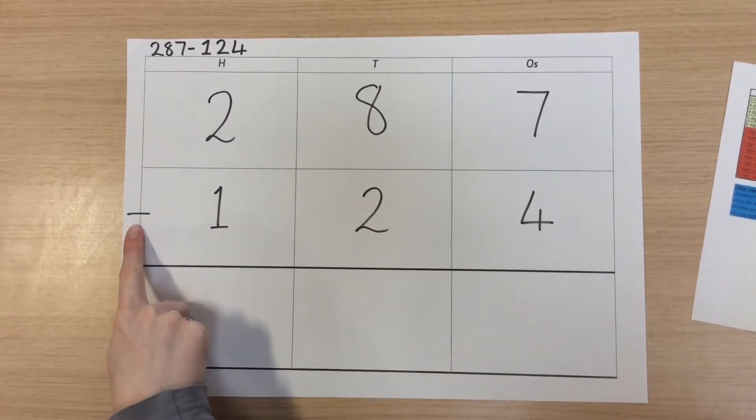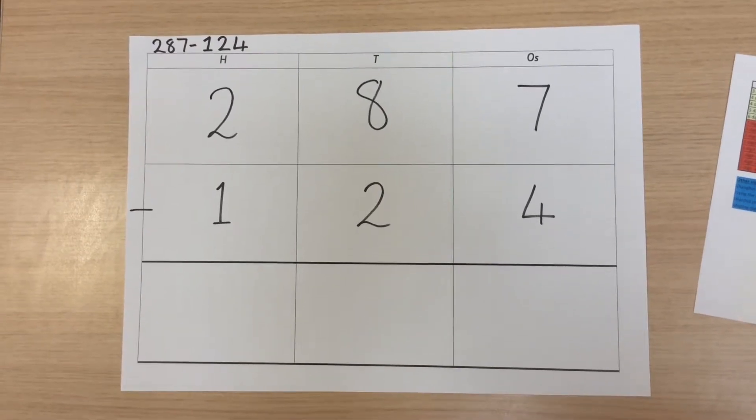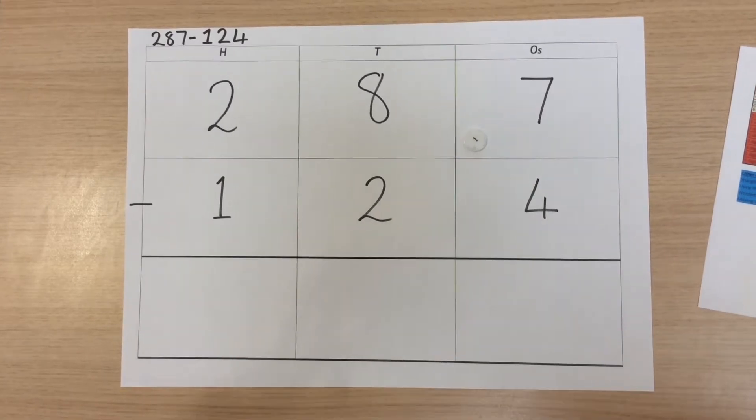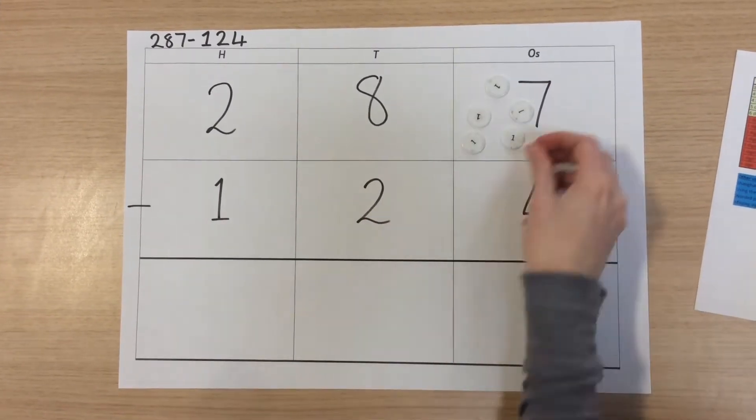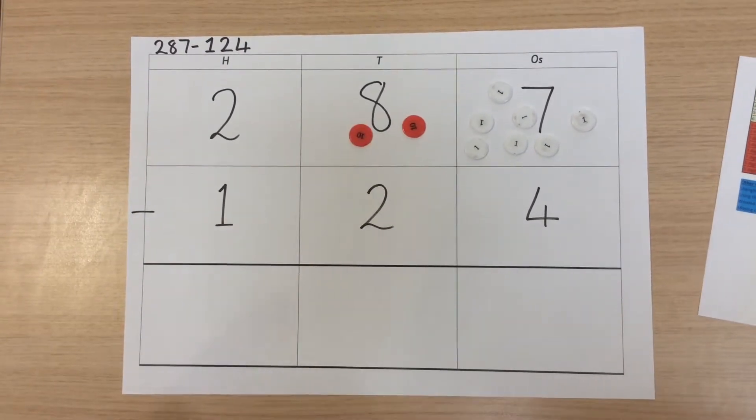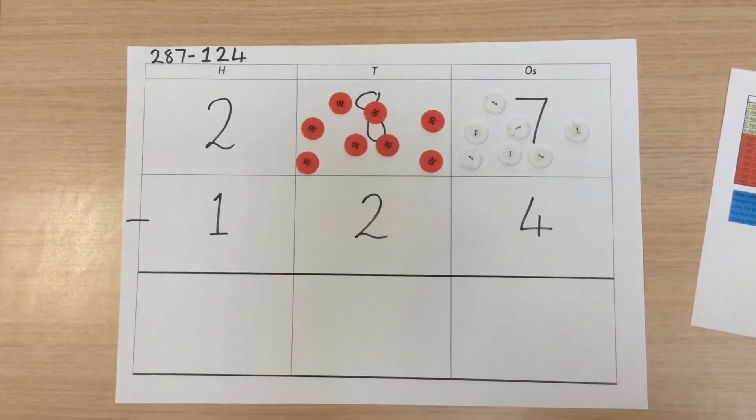We need to remember the operation on the left hand side of the calculation. We can then put our counters into each place value column. In this case, seven ones, eight tens, and two hundreds.